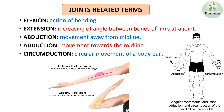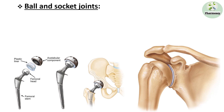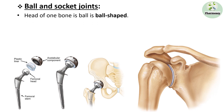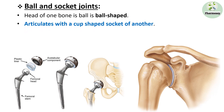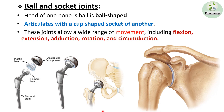Now we will discuss the different joints found in the human body. The first one is the ball and socket joint. The head of one bone is ball-shaped and articulates with a cup-shaped socket of another. These joints allow a wide range of movement including flexion, extension, adduction, rotation, and circumduction. Examples of ball and socket joints are the shoulder and hip bones.